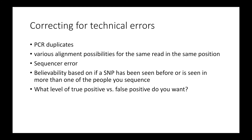Even if a SNP is looking fairly believable, if we've never seen it before, it's less likely to be true than it is to be an error. And then, not really a technical error but a very good question, is: for your particular experiment, what level of true positives and false positives do you want in your resequencing?